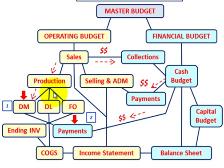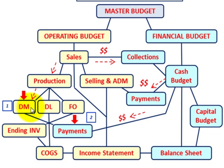To expand on this, the production budget includes the direct materials budget, direct labor, and factory overhead budget. With direct materials, there are two things to deal with: the budgeted amounts for direct materials, and the cash payments we'll have to make to buy them. Those cash payments fall under the financial budget — specifically the cash budget — along with the capital budget and balance sheet budget.